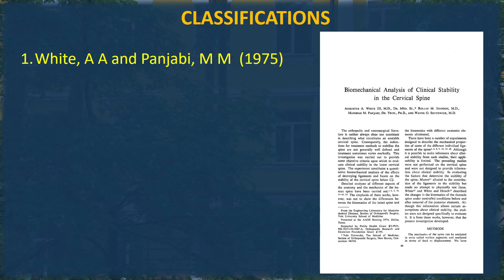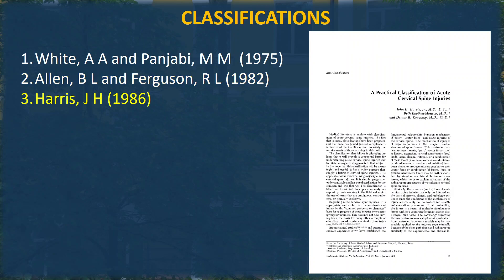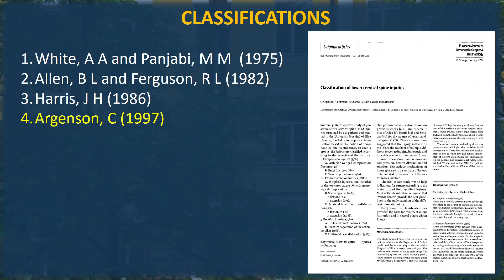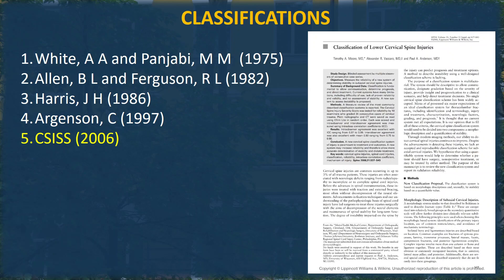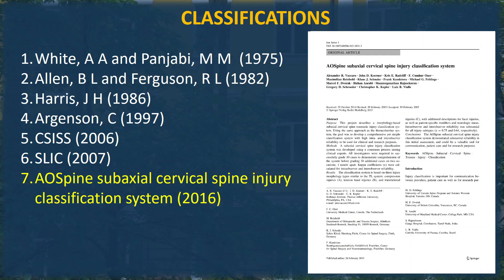Analysis of literature in historical aspect reveals a significant number of classifications of cervical spinal traumatic injuries. Here are the most well-known ones: White and Panjabi classification of injured cervical spine instability; Allen and Ferguson mechanical classification, later modified by Harris; another mechanical classification by Argenson; the Cervical Spinal Injury Severity Score; the subaxial cervical spinal injury classification and severity scale; and the AO Spine Subaxial Cervical Spinal Injury Classification System.